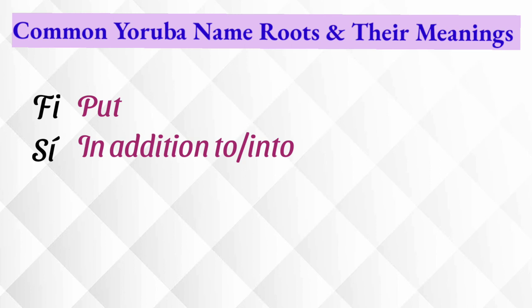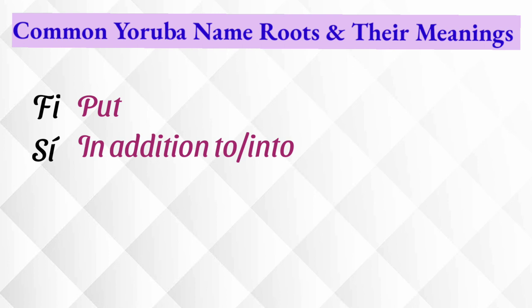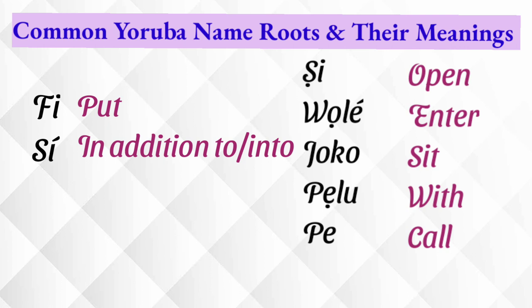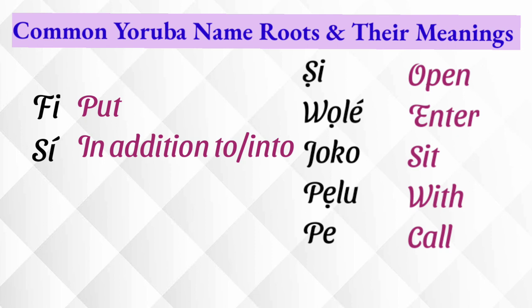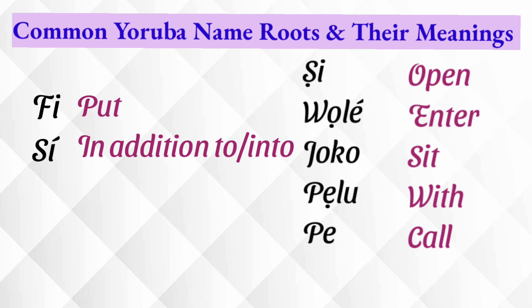Continuing with verbs: Fi means 'to put' — examples include Finifoluwa, Fisayo, Fikungayo. Si means 'in addition to' — so Fisayo means you are putting in addition to joy. She also means 'opened' or 'launched' — Adeshile means crown has opened this house; Olashile means wealth has opened this house; Omoshile means this child has opened this house. That name is usually given when a child is born around the time the parents did their housewarming ceremony.